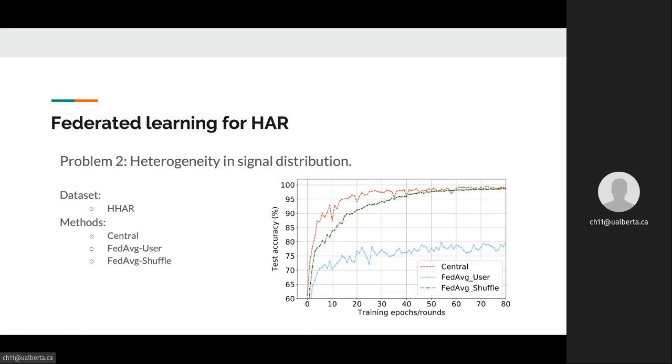To demonstrate the influence of heterogeneity in signal distribution, we compare three methods on the HHAR dataset, a public dataset we will introduce later. The three methods are: the central method, where all data is collected on a server and the HAR model is trained centrally; federated average user, where users keep their own local datasets and we apply the federated average algorithm; and federated average shuffle, in which we shuffle all data among users to eliminate the heterogeneity in signal distribution, and then apply federated average.